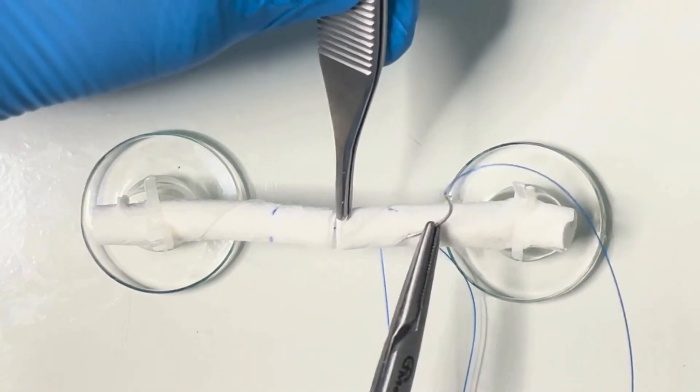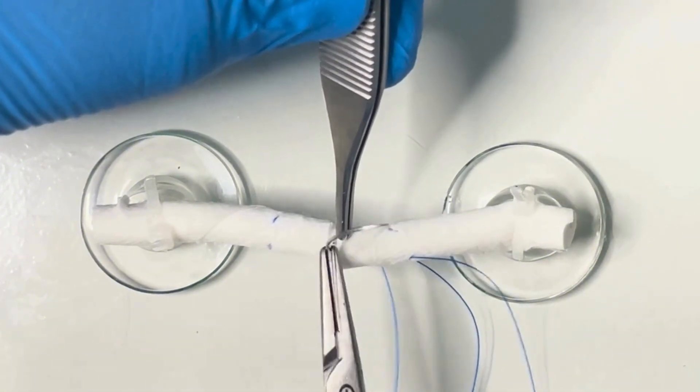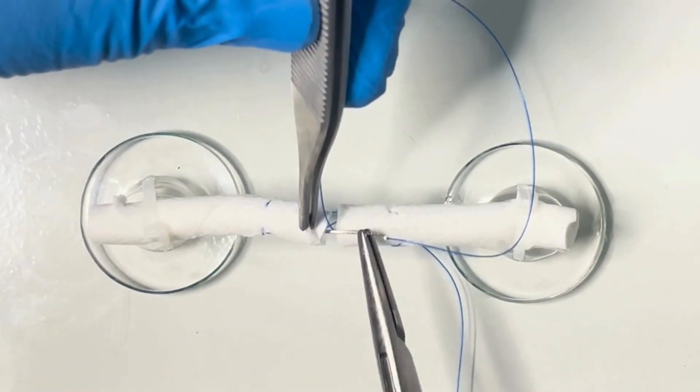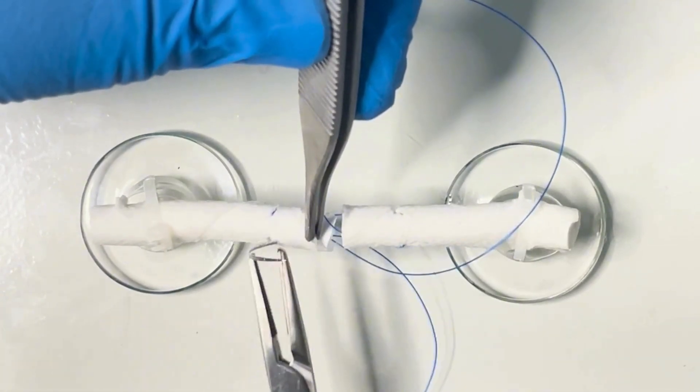Tying at this point would make this a two-stranded repair. I want a four-stranded repair, so I will repeat the process, placing the stitches before my previous ones.